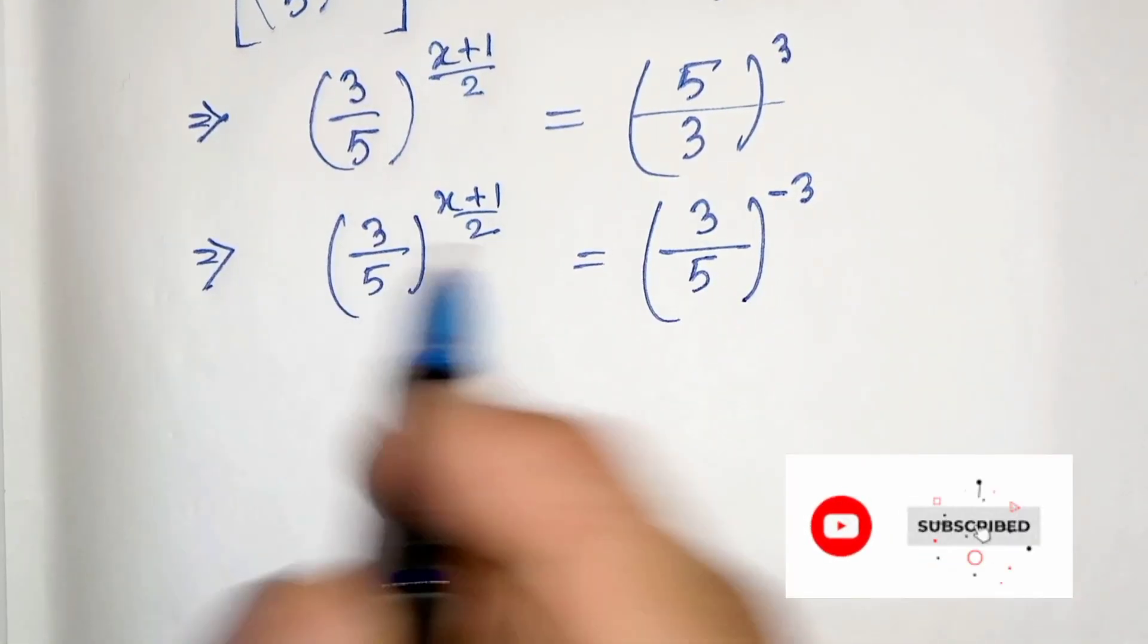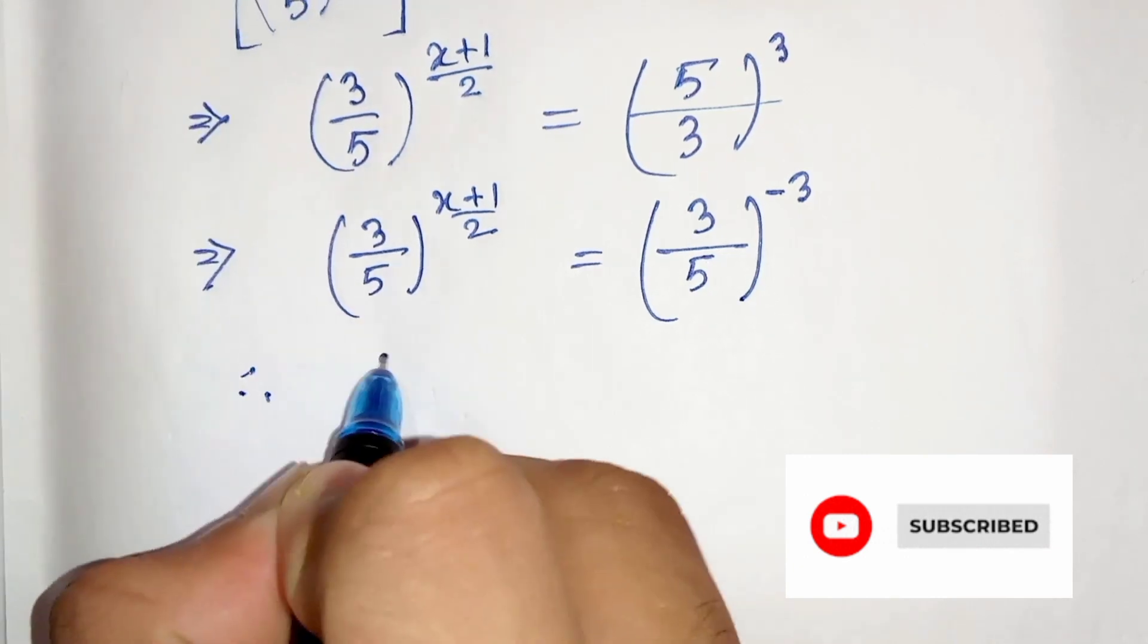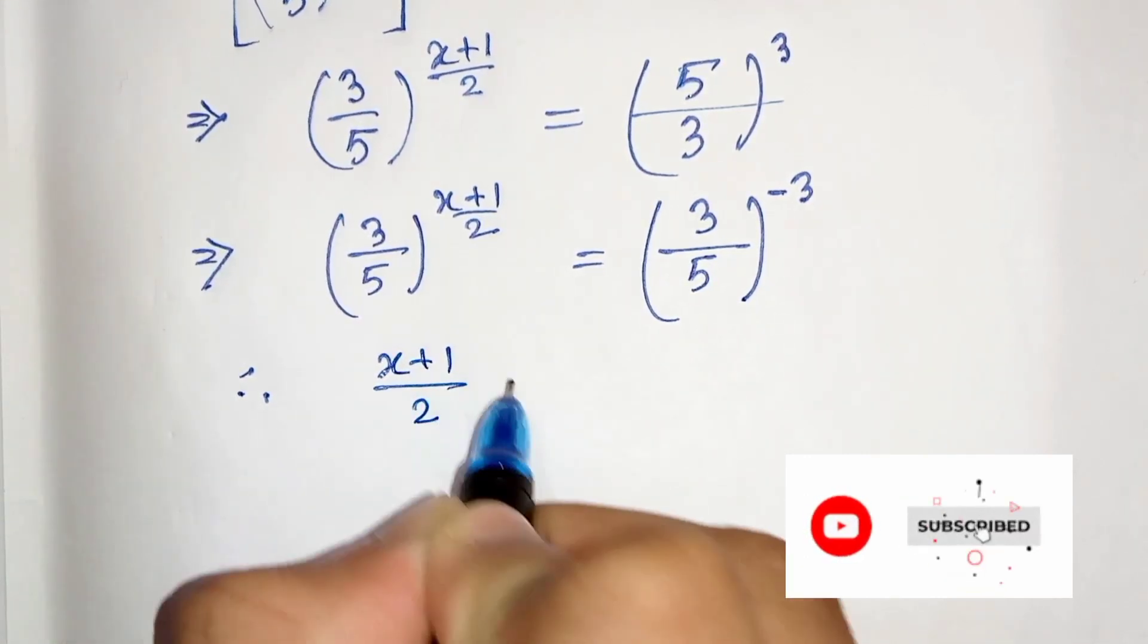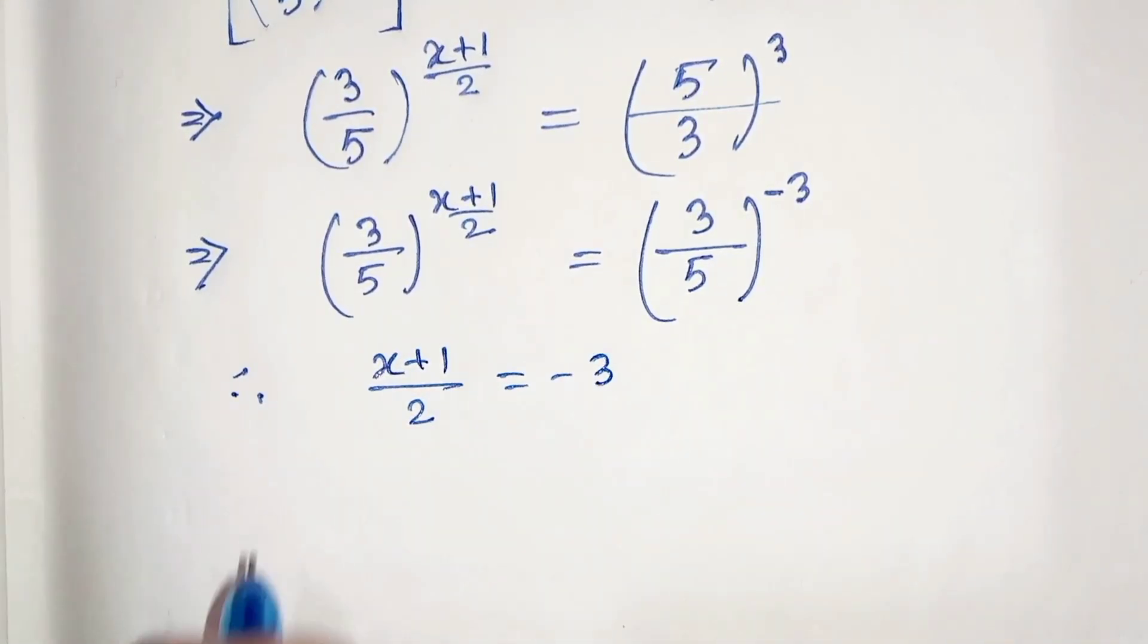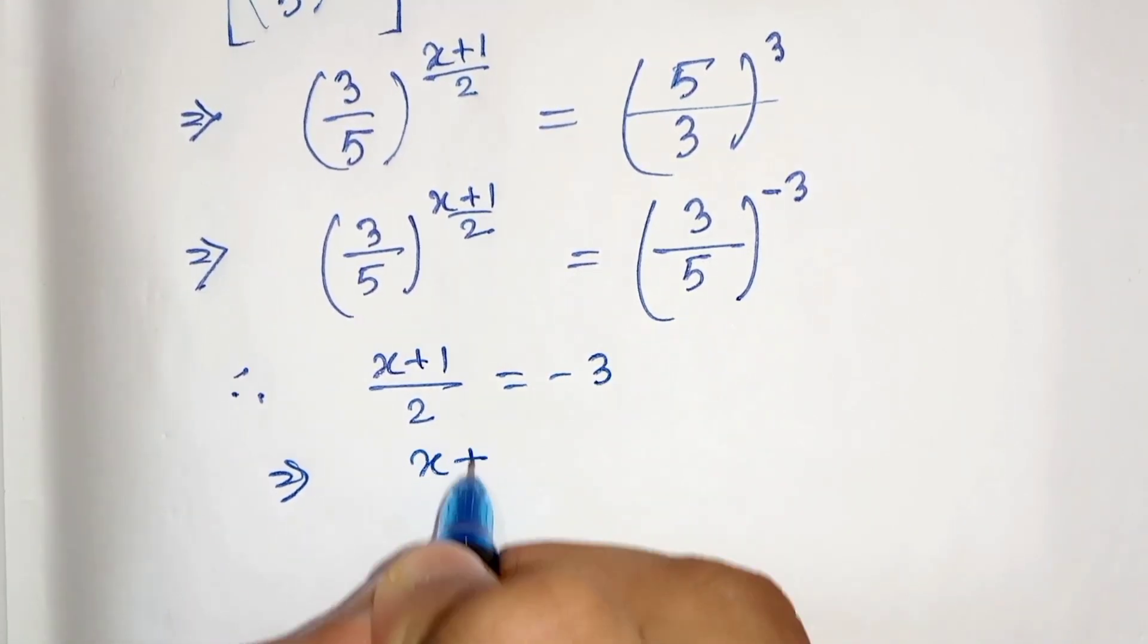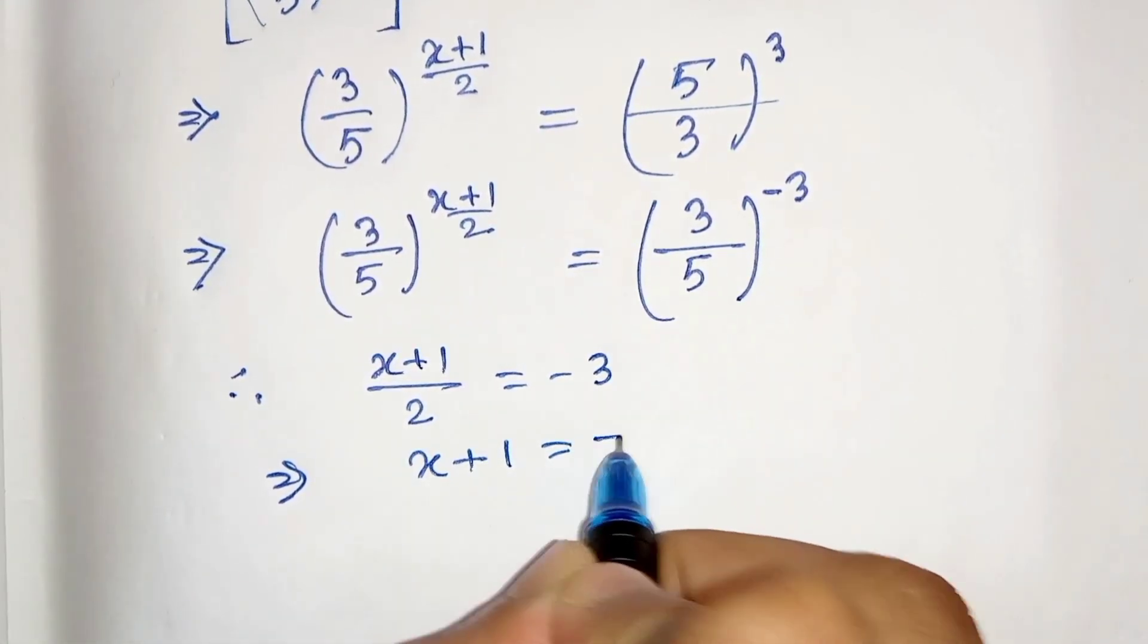From here we can write x plus 1 divided by 2 equals minus 3. Now let's cross multiply it, so x plus 1 equals 2 times minus 3, which is minus 6.